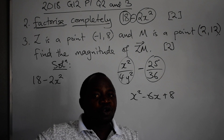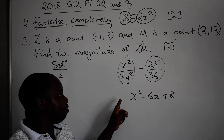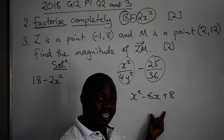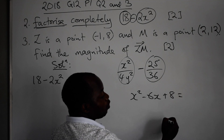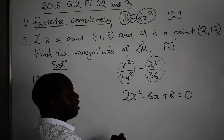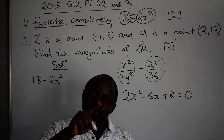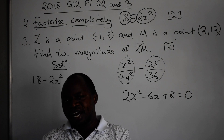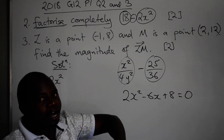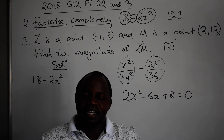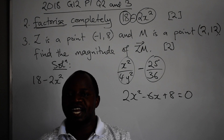Those that cannot be factorized you see them in paper two, and in paper two it will be 'solve the equation.' It means that one cannot be factorized in this way. It cannot be factorized, so for you to solve that — if they say equal to zero and there's a number here — you have to use the quadratic formula. Those that they bring in paper one can be factorized because in there you will not be allowed to use the calculator.